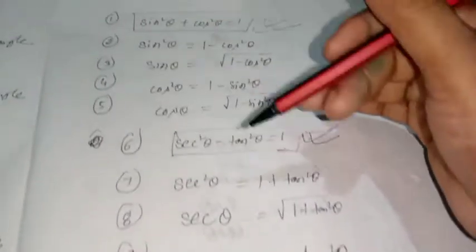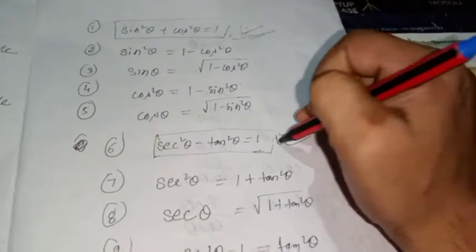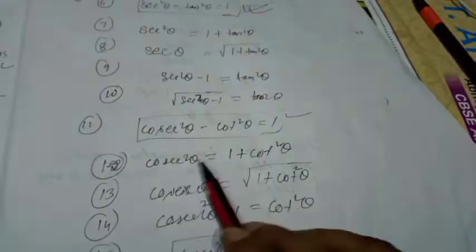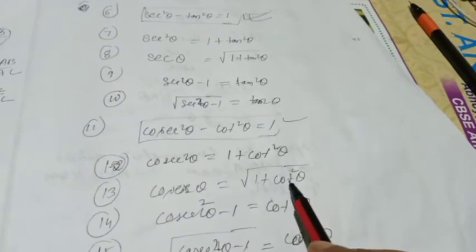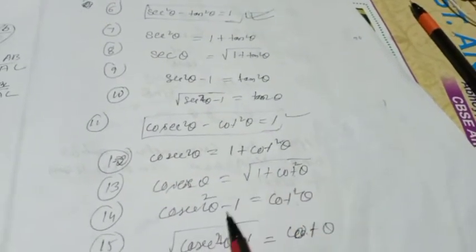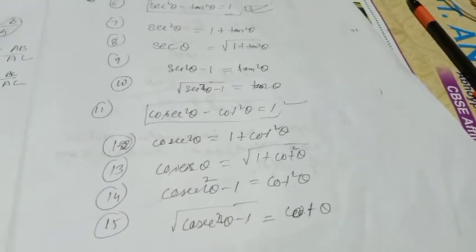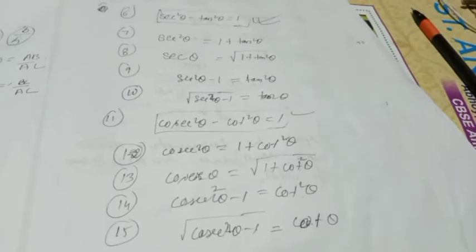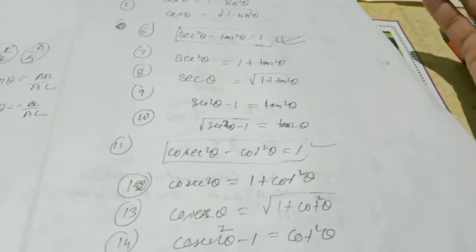For the third identity, cosec²θ - cot²θ = 1: from this, cosec²θ = 1 + cot²θ, so cosec θ = √(1 + cot²θ). If you transfer 1 to the left side, cosec²θ - 1 = cot²θ, so cot θ = √(cosec²θ - 1). The three main identities are the primary ones; these derived relations follow from them.